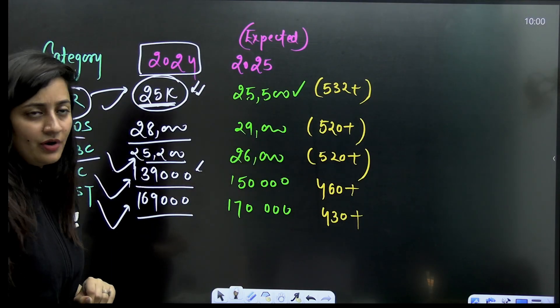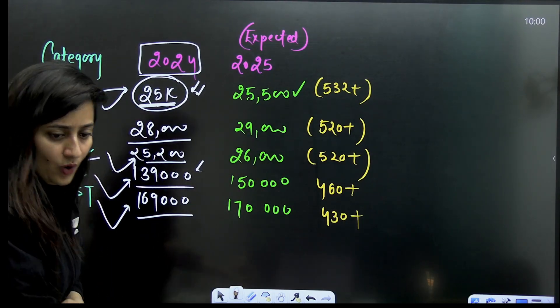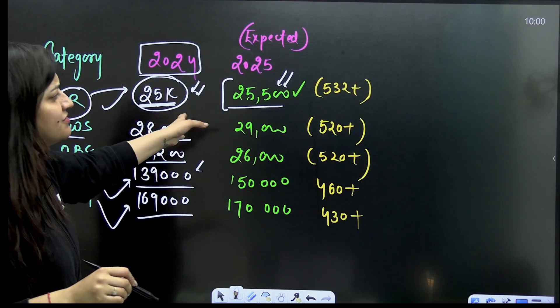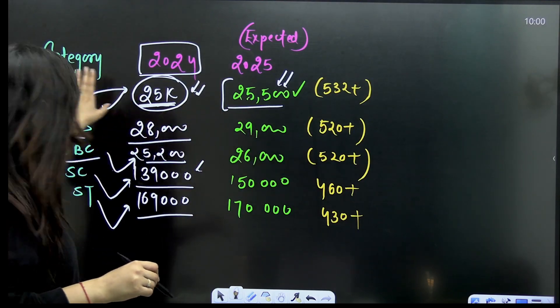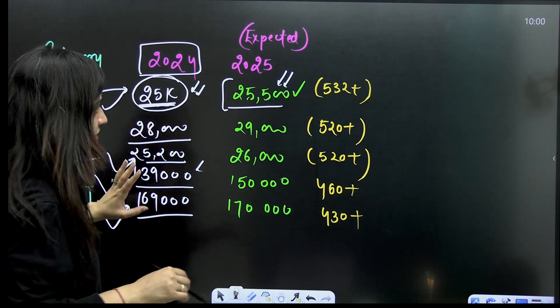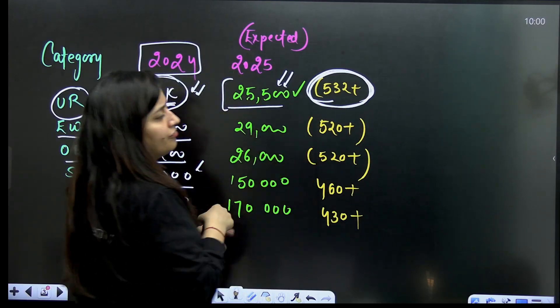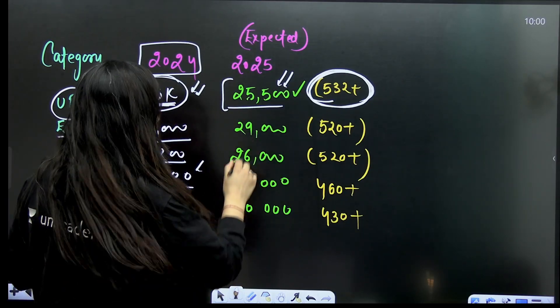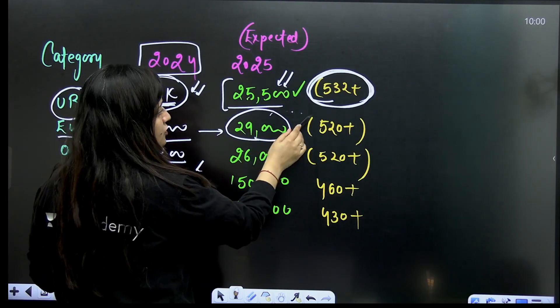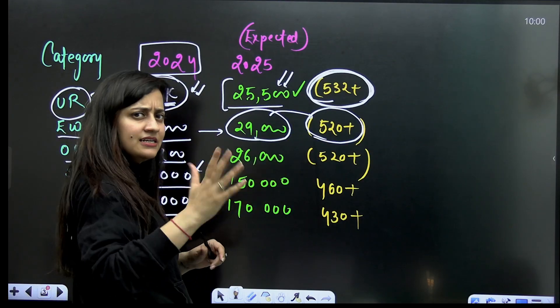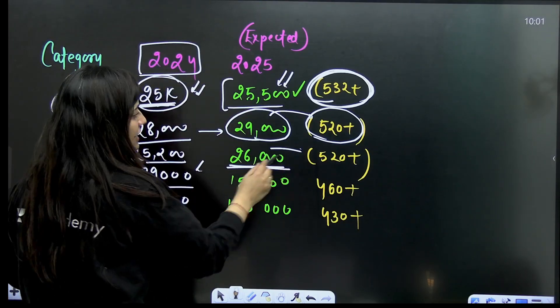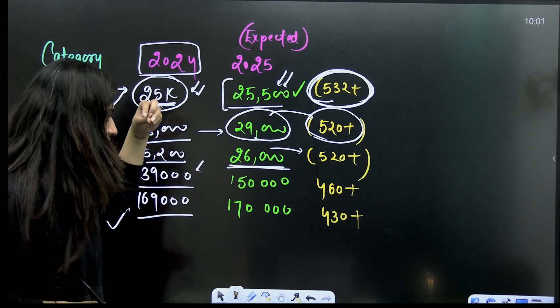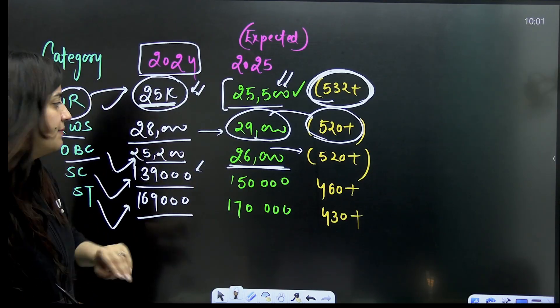Compare it with 2025. As per the cutoff, this time 25,500 will be the rank - this is the expected closing rank. That student will have marks somewhere between 520 to 530, plus minus 10. For EWS 29,000, so 520 plus marks, again plus minus 10. For OBC, if your rank is around 20,000-26,000, definitely you will get government medical college.